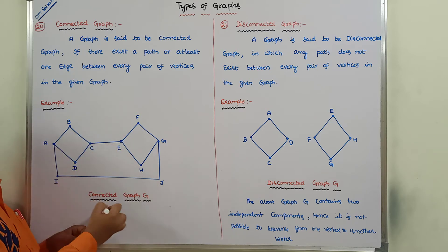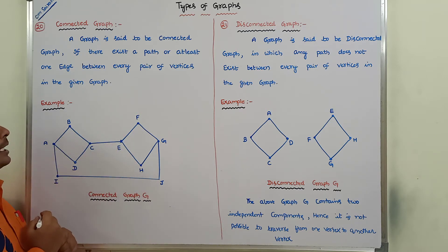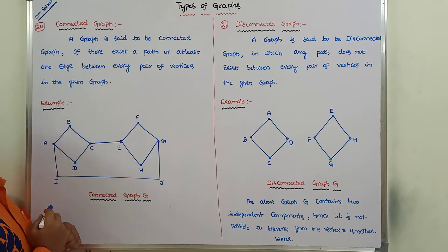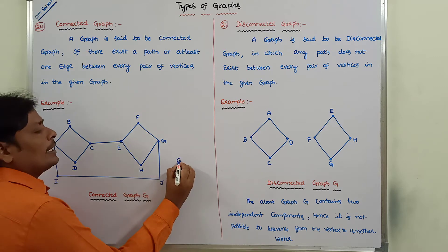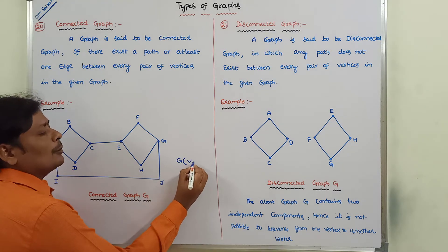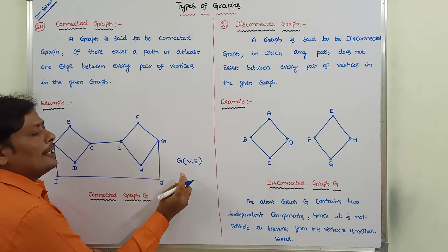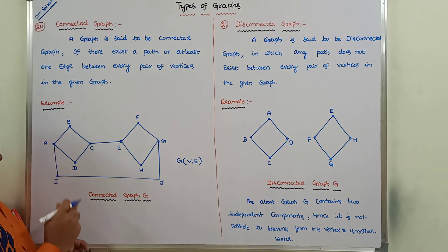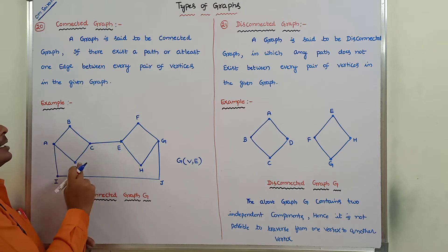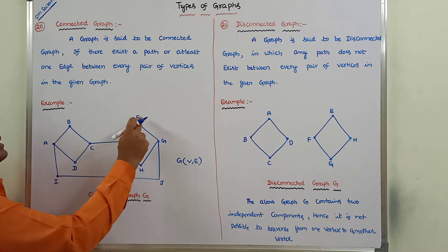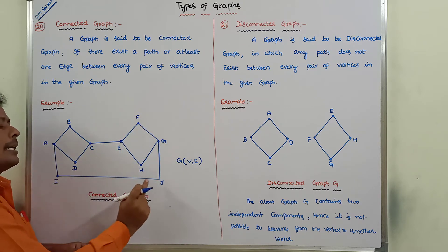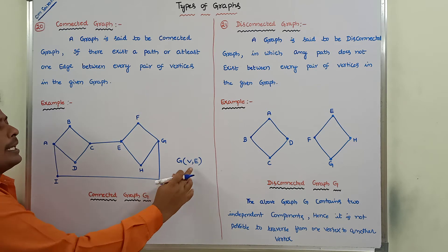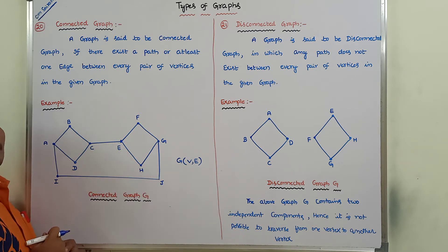Now this is a given graph. In that graph, there is a set of vertices and a set of edges. The given graph G is equal to (V, E). V is nothing but the set of vertices: A, B, C, D, E, F, G, H, I, J.